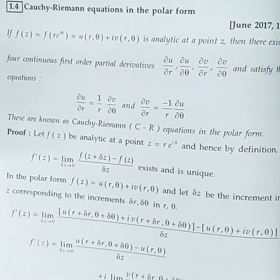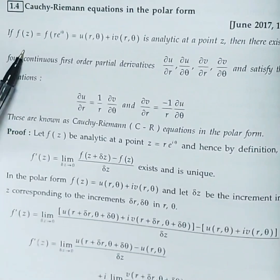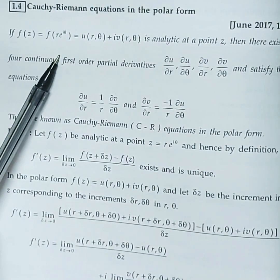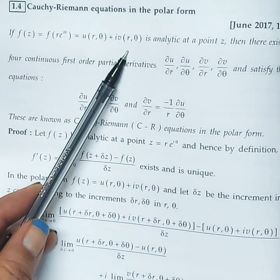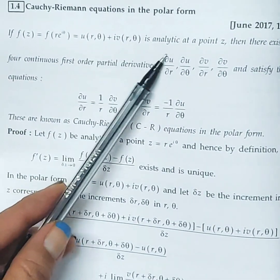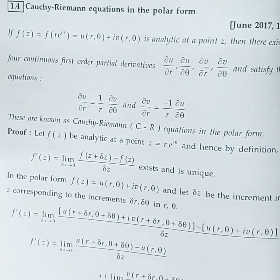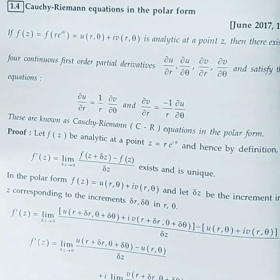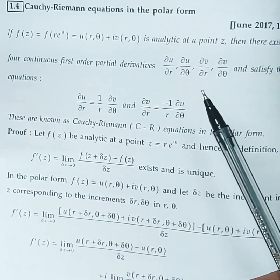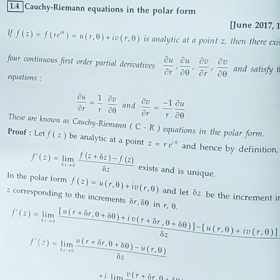They will always ask us to state and prove, so we have to memorize the statement. Now see the statement. If f(z) = f(re^{iθ}) = u(r, θ) + i·v(r, θ) is analytic at a point z, then there exist four continuous first order partial derivatives: ∂u/∂r, ∂u/∂θ, ∂v/∂r, ∂v/∂θ, and they satisfy the following equations.